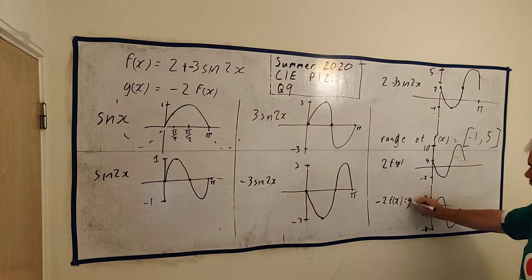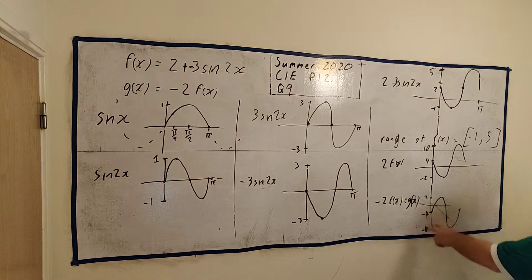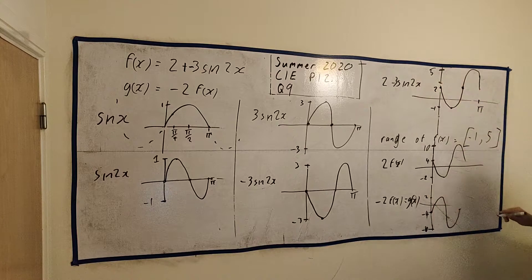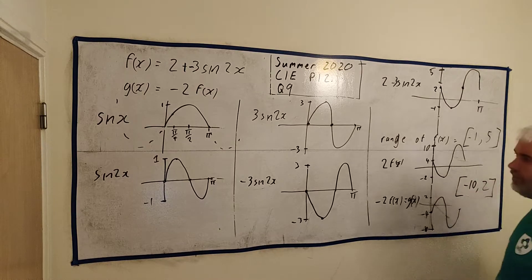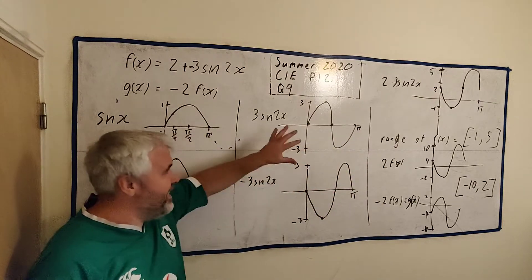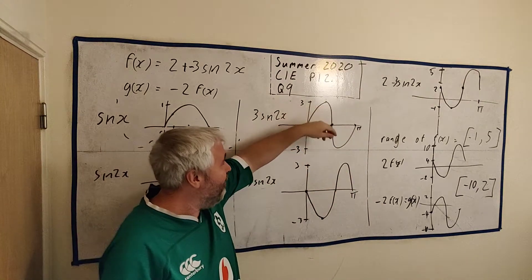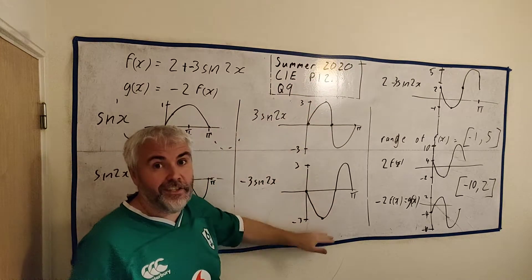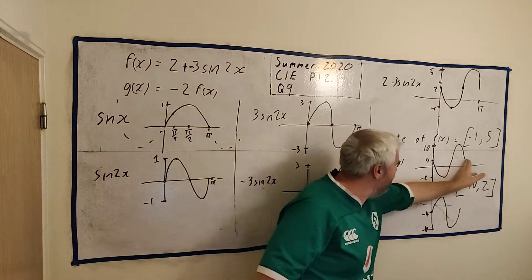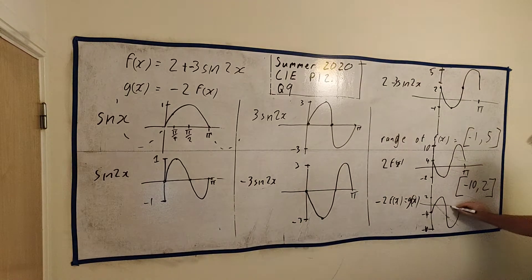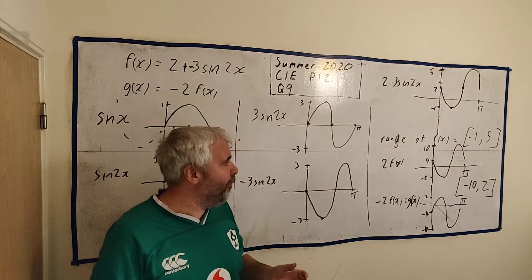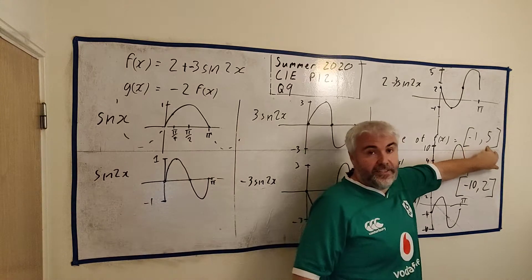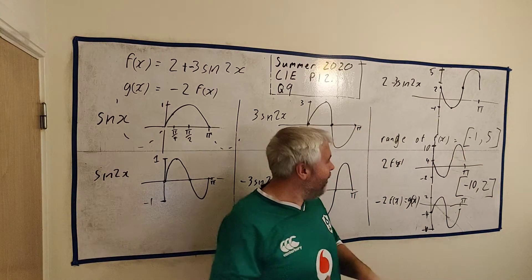So that's what g(x) looks like — the range is between minus 10 and 2. All these functions share the same domain — they all go from 0 to pi. I do all of this in my head now. You could get full marks on this question by just writing the range of f(x) and the range of g(x) down with no working shown.